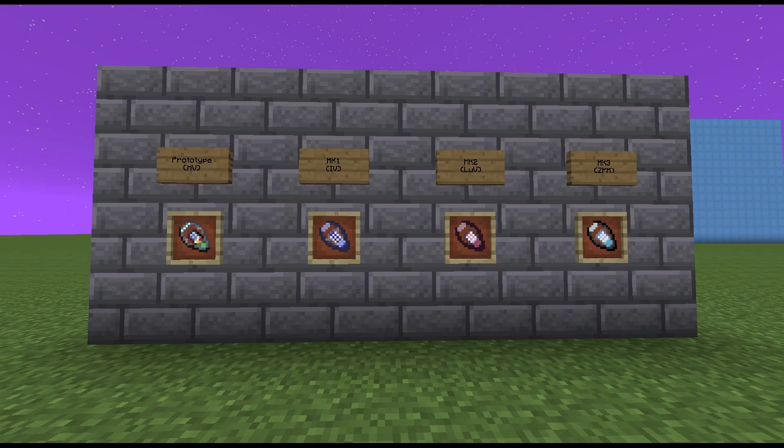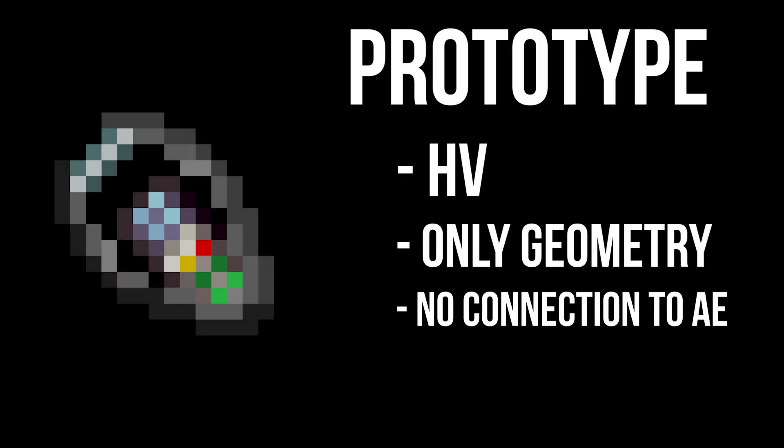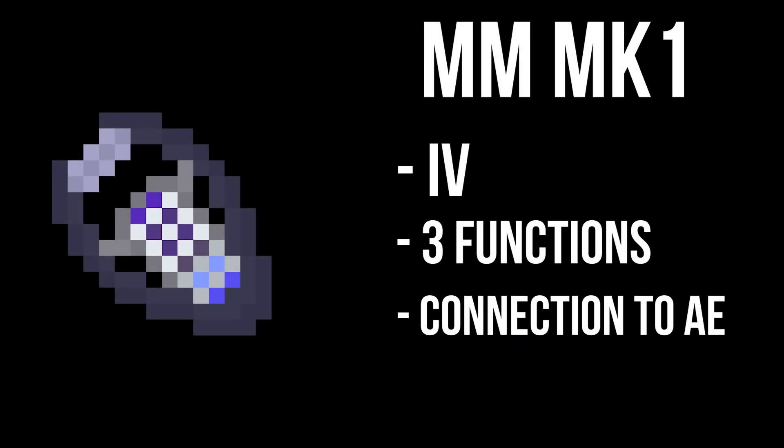The tool comes in four variants: prototype, MK1, MK2, and finally MK3. The prototype can be built in HV and is locked to only geometry mode — it cannot be connected to AE, but is useful for cleaning out rooms and minimal building. The Matter Manipulator MK1 can be built in IV and unlocks two more functionalities in addition to geometry: exchanging and cables.